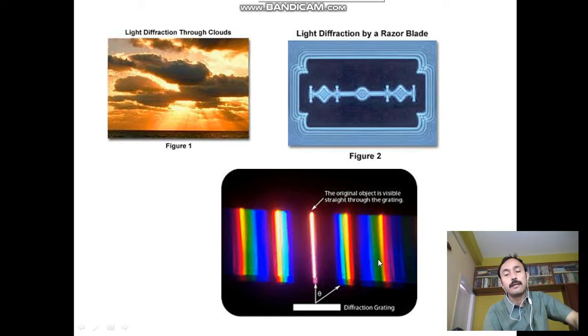This is maximum intensity, then it is decreasing and decreasing and so on, in the right hand side and also the left hand side. And this is the original object visible straight to the grating. So these are the different optical phenomena that we can observe due to the diffraction of light.